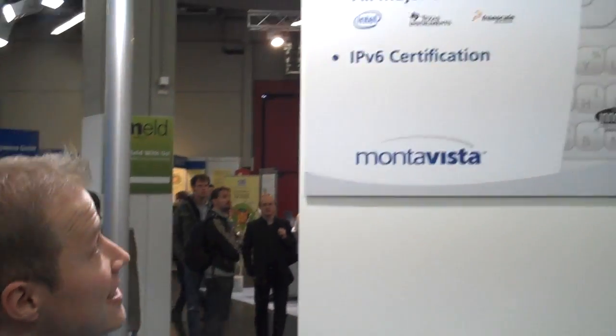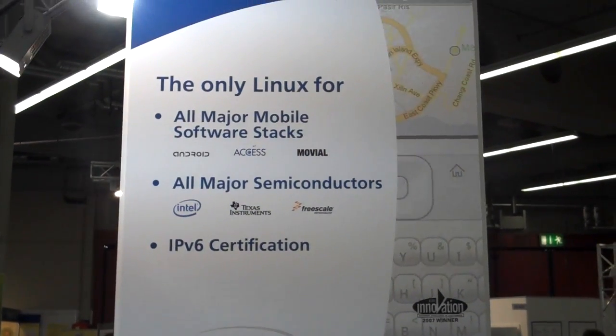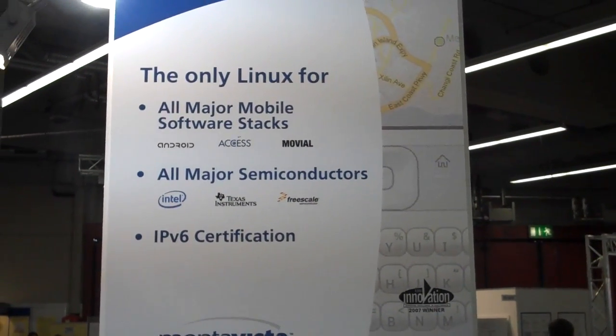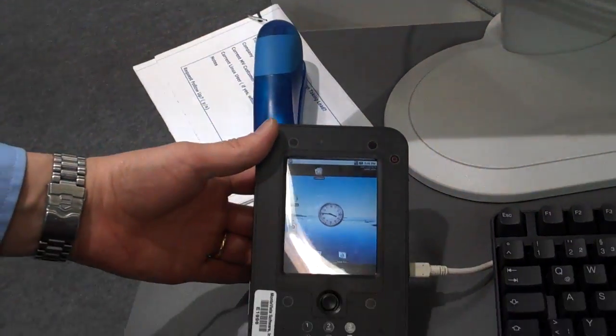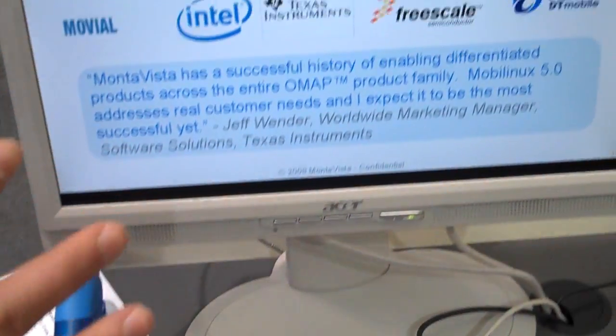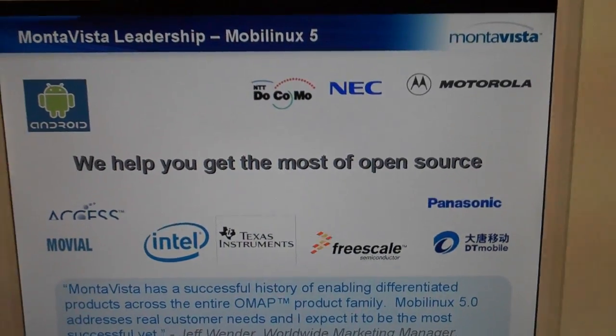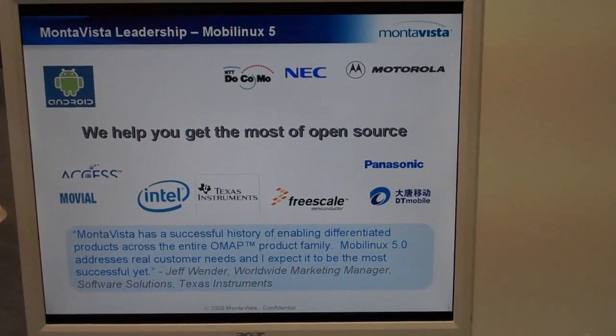This is our mobile stack. We're showing our integration with various mobile partners. We're showing our platform, Mobile Linux 5, running below the Android platform. It's just one example of what we can do with the mobile platform. We have several other partners we'll be working with in this area. We have Android Access and Mobile as one of the main stacks we integrate with.